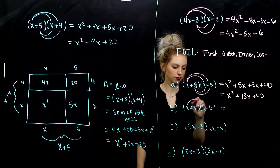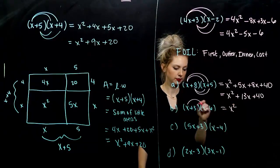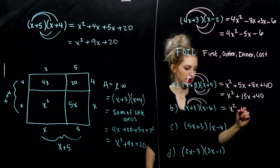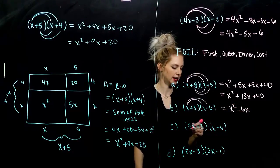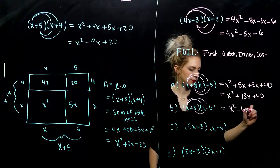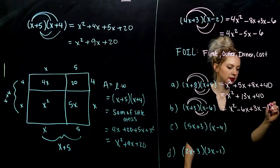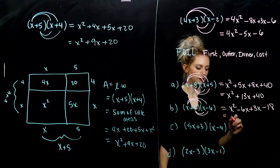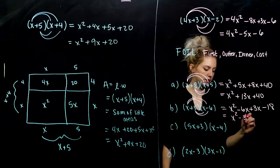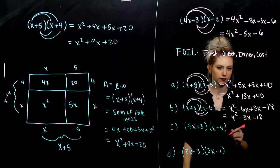Second one. First, x squared. Outer, negative x. Negative 6x. Inner, positive 3x. And, last, negative 18. Combining our like terms in the middle, I have negative 3x. And, that one's done.